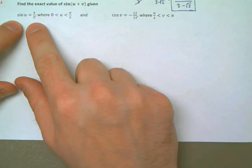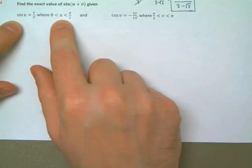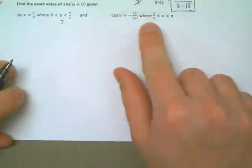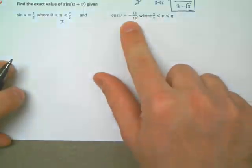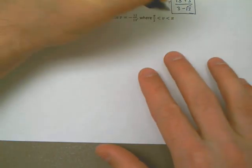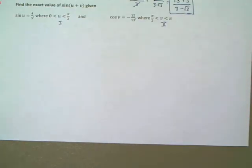They want us to find the exact value of sine u plus v, the sine of the two angles u plus v added together. And they give us some background information. The sine of the first angle is 4/5 and the angle is between 0 and π/2. That means quadrant 1. So that's very important information. And the second angle v, the cosine of that angle is negative 12/13, and that's because it's between 90 degrees and 180 degrees. That means it's in quadrant 2.